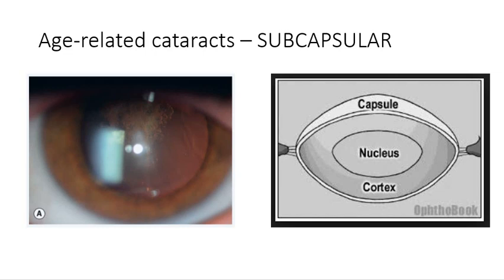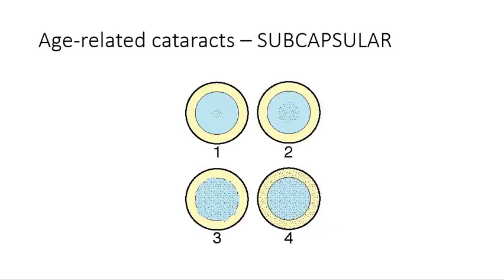On the picture on the left, you can see the subcapsular cataract in the browny areas that look a little bit forward compared to the rest of the lens. Subcapsular cataracts are graded according to their severity as you're looking at them from the front of the eye. This severity ranges from 1, which is a mild subcapsular cataract, all the way through to 4, which is a subcapsular cataract that spreads all the way across the lens as shown in this schematic diagram.